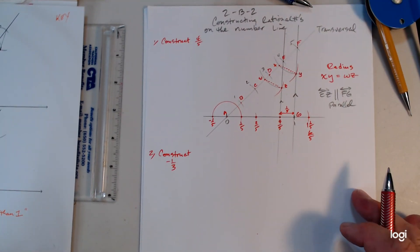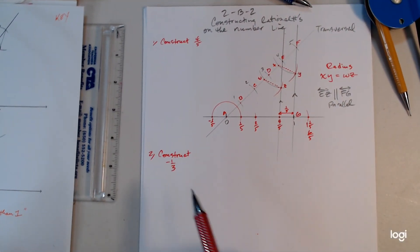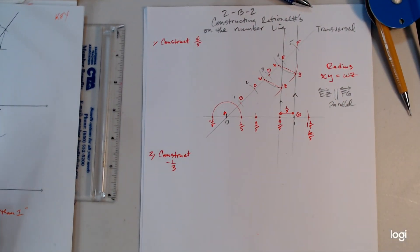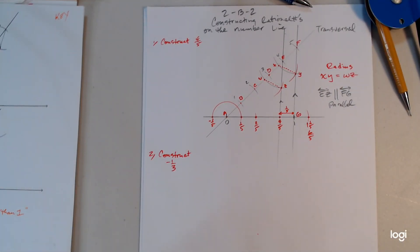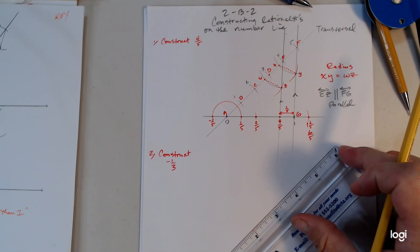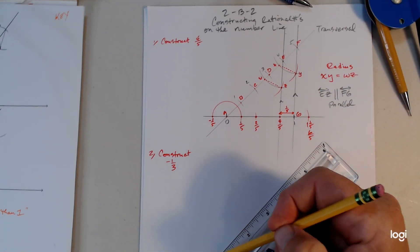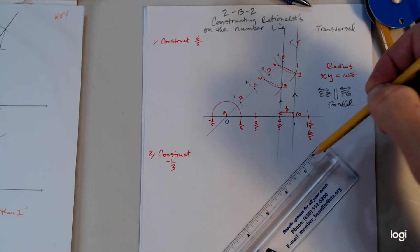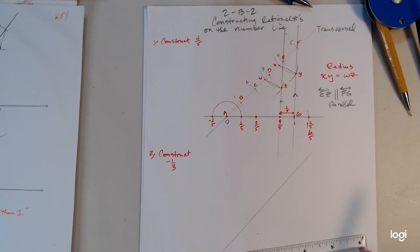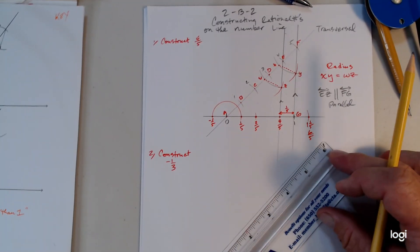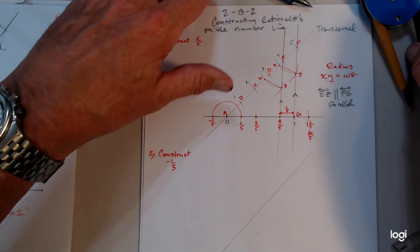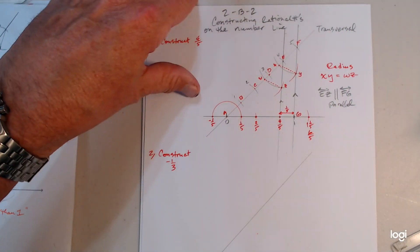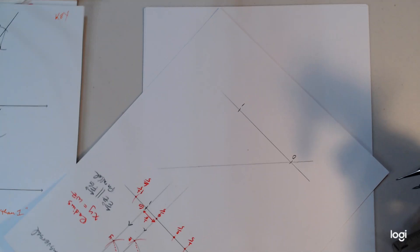Let's try constructing one-third and then negative one-third. This one's easier — the smaller the denominator, the easier the construction is. So draw a transversal first through zero. I wouldn't suggest picking a very low angle — that's very difficult. Bring it to around 40 or 45 degrees. Get your compass and construct three congruent arcs.